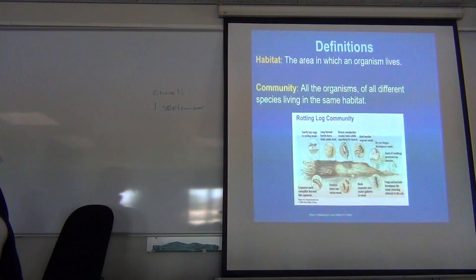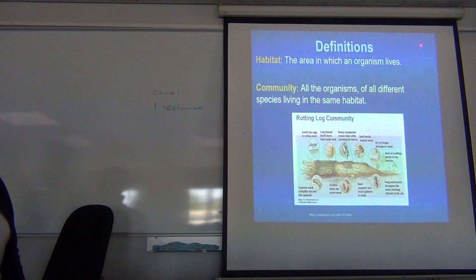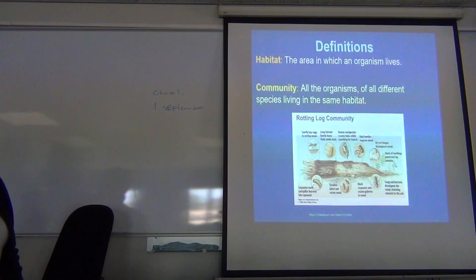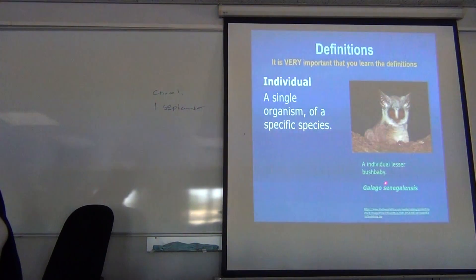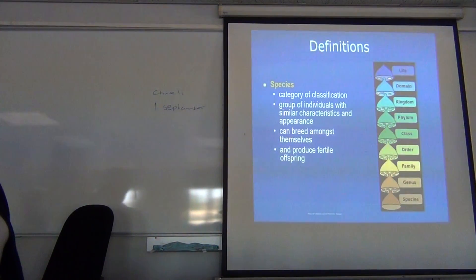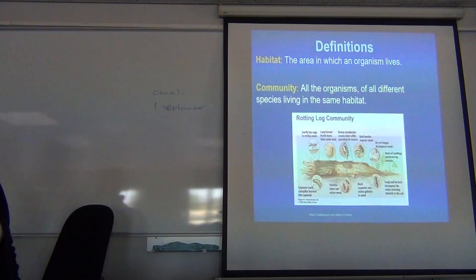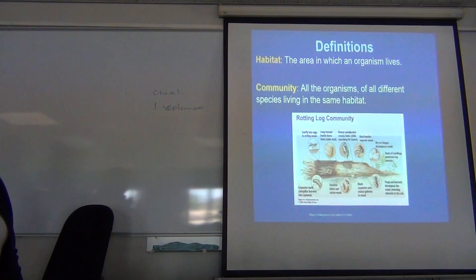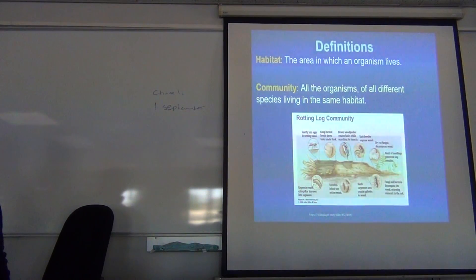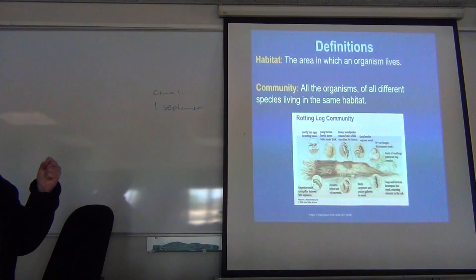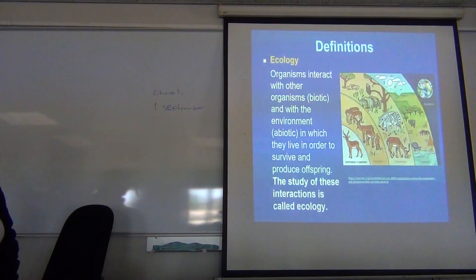A habitat is the area in which an organism lives. If asked what the habitat of Galago senegalensis is, you would say a tree or a bush — a forested or bush-land area. You're never going to find a Galago swinging around in grass on a maize field.